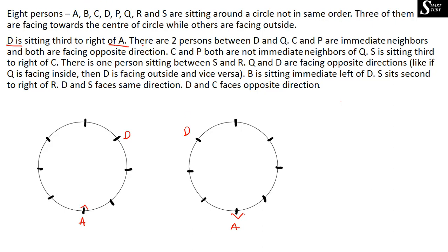The next information is: there are two persons between D and Q. So between D and Q there must be a gap of only two persons. D is here — going one side: one, two — Q can be substituted there, but already A is there, so Q cannot be substituted there. Going the other side: one, two — so Q has to be substituted there. The same logic applies for the second case arrangement.